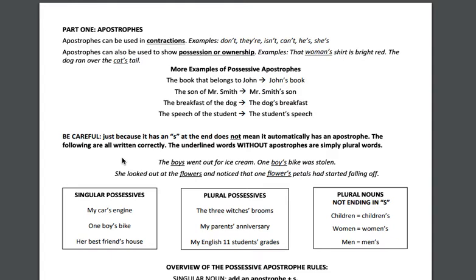Now, every year that I teach this, I suddenly have students who start using an apostrophe every time they see an S at the end of a word. Please do not do that. Oftentimes, an S at the end of a word is just pluralizing it — there's more than one boy, I just put an S; there's more than one flower, I just put an S. However, when I'm talking about a bike that belonged to a boy being stolen, or petals that belong to a flower falling off, that is when I want to use my possessive apostrophe, because the word that comes after belongs to this word.